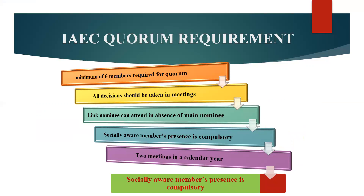For the quorum requirement: minimum six members including the CPCSEA nominee are required to compose a quorum. All decisions should be taken in a meeting and not by circulation of project proposals. Presence of CPCSEA nominee is mandatory. The link nominee can attend in case the main nominee conveys his unavailability in writing to the chairman of IAEC. The socially aware member's presence is compulsory in cases referred to CPCSEA. At least two meetings in a calendar year are required. The socially aware nominee's presence is mandatory when discussing large animal projects and must be present at least once in a year.